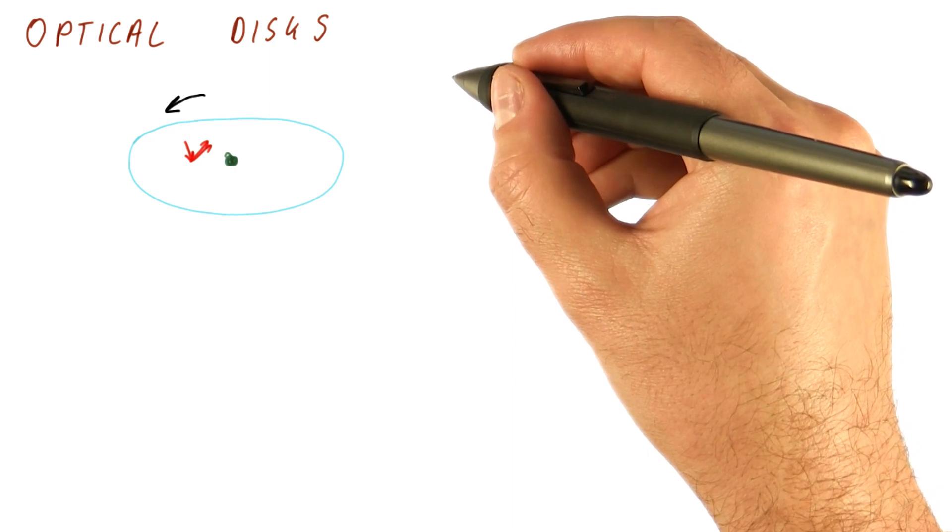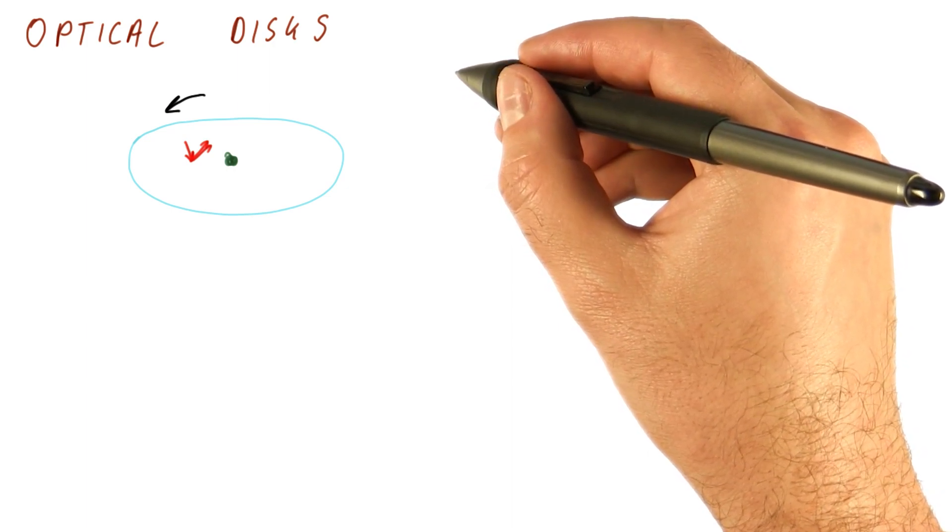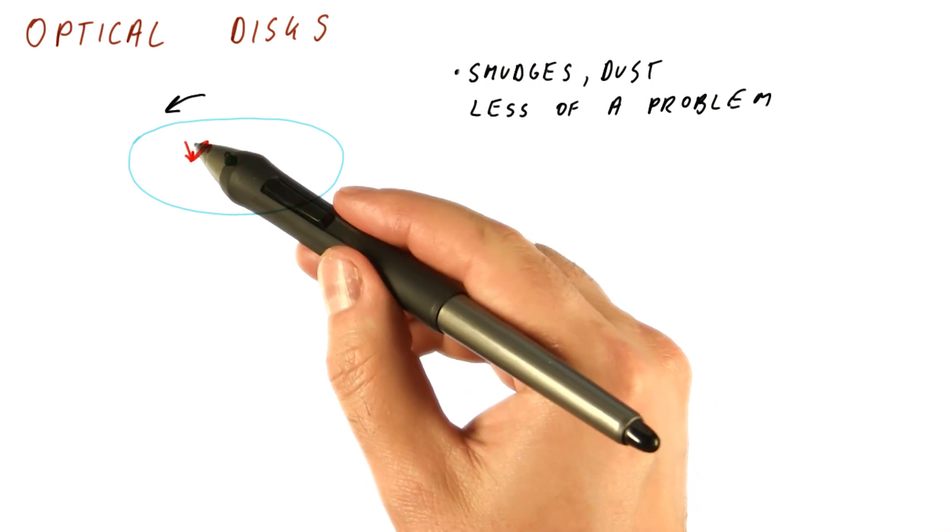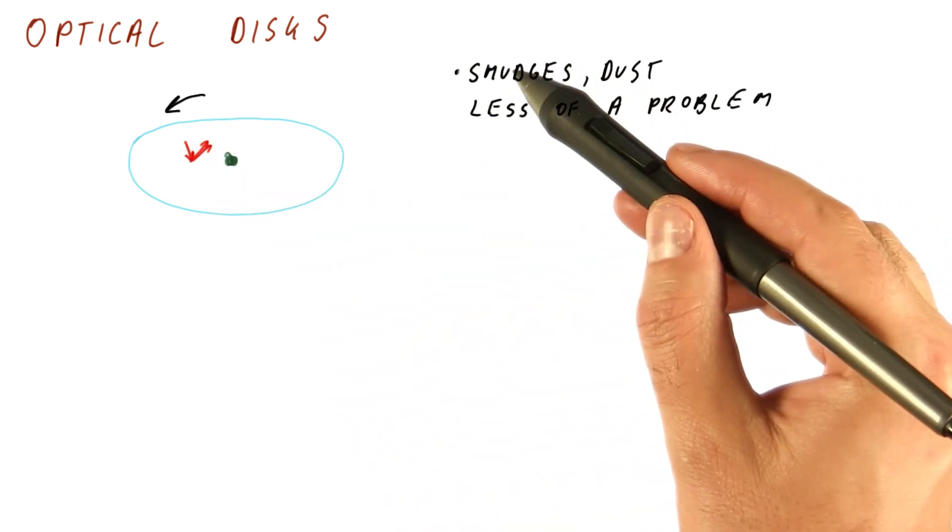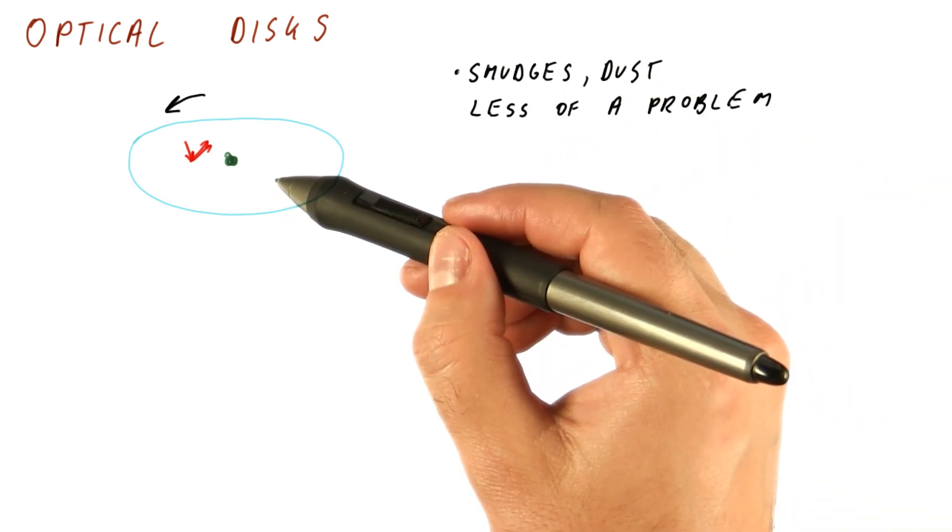Unlike hard drives that tend to be closed units, optical drives don't need the laser to get that close to the surface, so smudges or dust are less of a problem. Basically, if there is a speck of dust here,